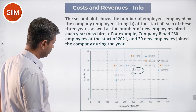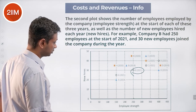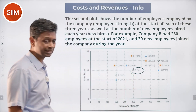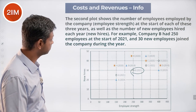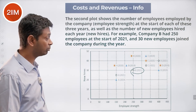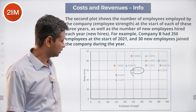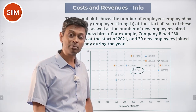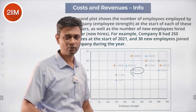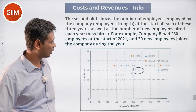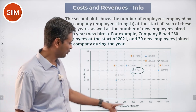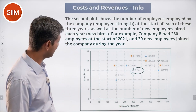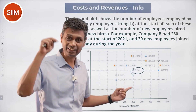30 new employees joined company B during the year, so the end of the year should have been 250 plus 30, i.e. 280, assuming people didn't leave. These are new hires; obviously people are quitting as well. So 250 is the strength at the beginning of the year and 30 new have been added in that year.